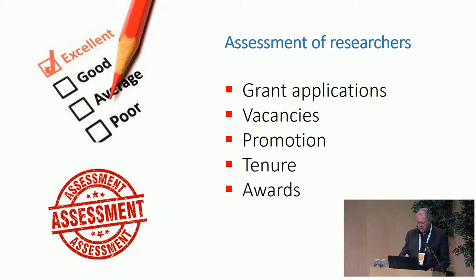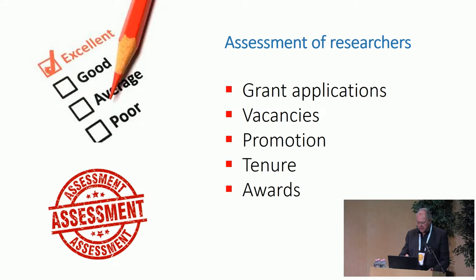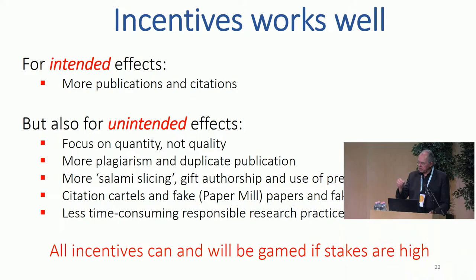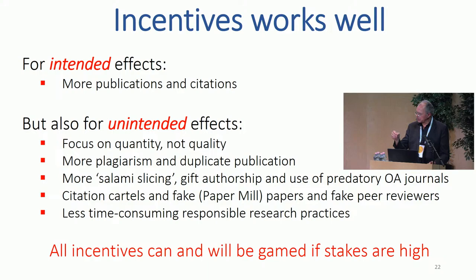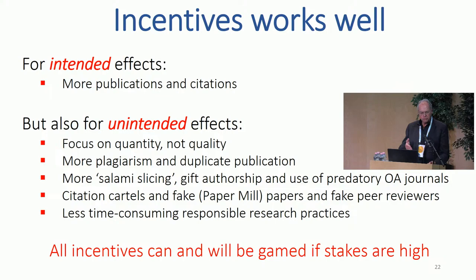Finally, let's talk about perverse incentives. The assessment of researchers is very prevalent — for grant applications, vacancies, promotion, tenure, and awards. There are intended effects: when we judge people on citations and publications, that's what you get — more citations, more publications. But there are downsides: focus on quantity not quality, more plagiarism, duplicate publications, salami slicing, gift authorship, predatory open access journals, paper mills, and fewer responsible research practices like open data. The downsides are awful.